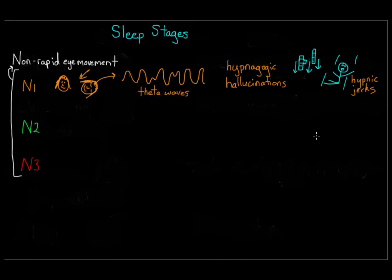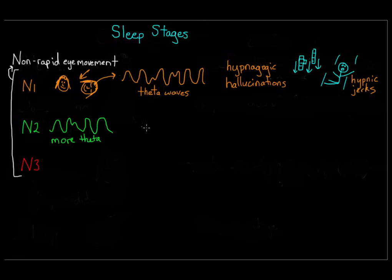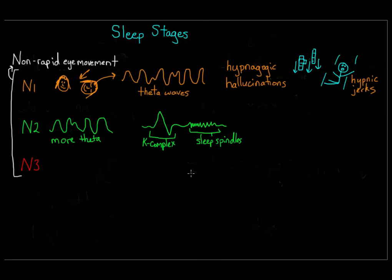N2 is a slightly deeper stage of sleep. While it's still pretty easy to wake someone in N1, people in N2 are harder to awaken. We see more theta waves as well as sleep spindles and k-complexes. Sleep spindles are bursts of rapid rhythmic brain activity. Some researchers think sleep spindles help inhibit certain cognitive processes or perceptions so that we maintain a tranquil state during sleep.